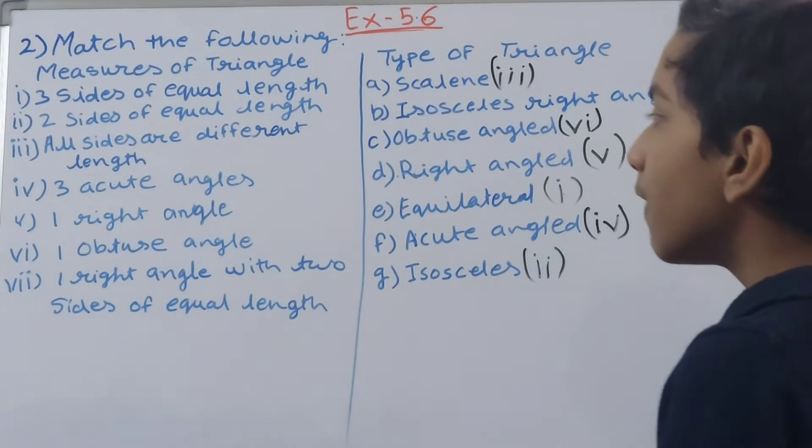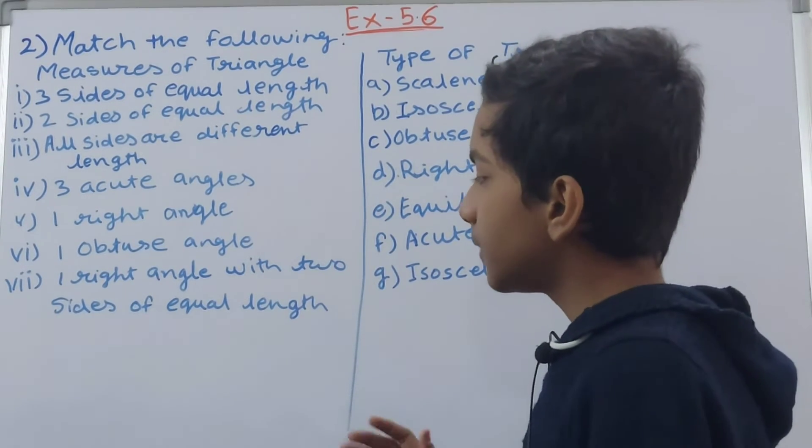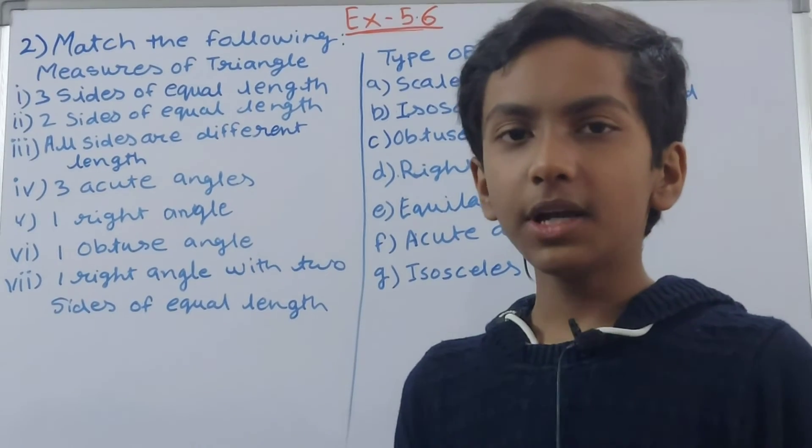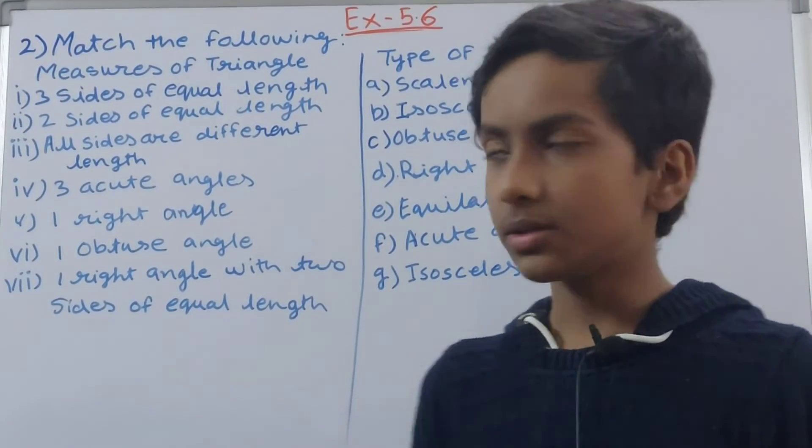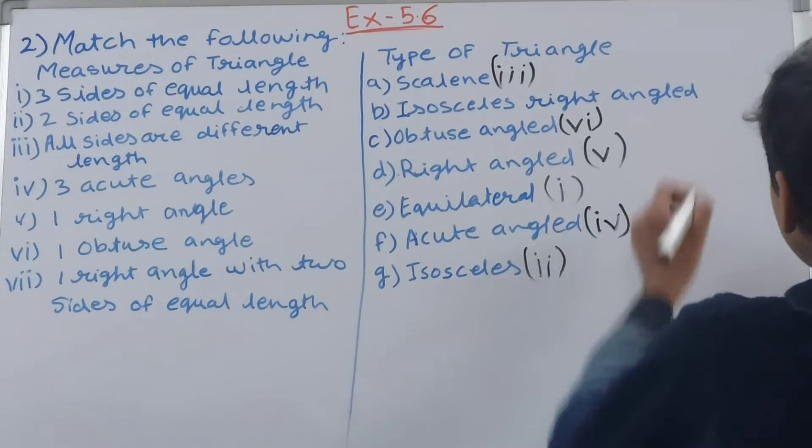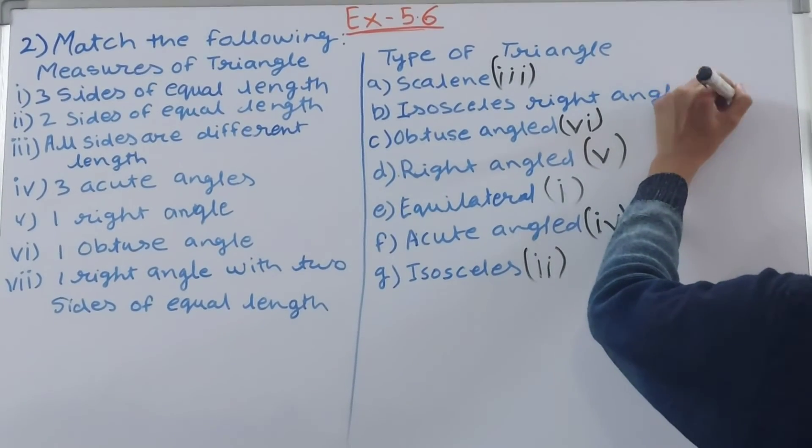Then one right angle with two sides of equal length. Now one right angle, right angle triangle, two sides of equal length, isosceles triangle. So isosceles right angle will be your answer, this one.